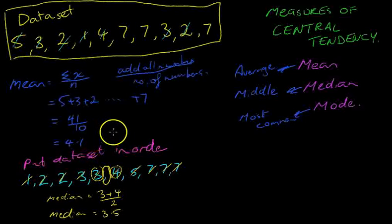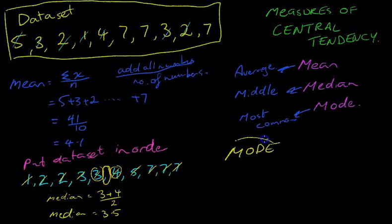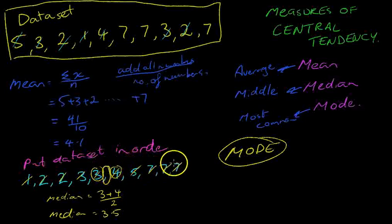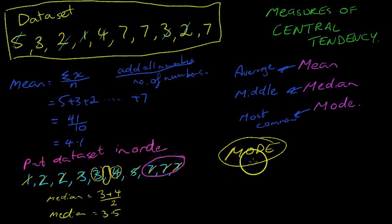Last but not least, we're looking at the mode. Now the mode's very simple. The mode allows us to find the most common number. Now looking at our data set, 7 appears 3 times. So the mode is equal to 7. It's the most common number.